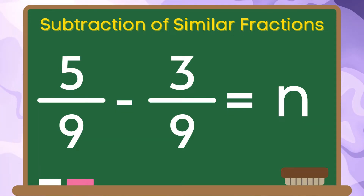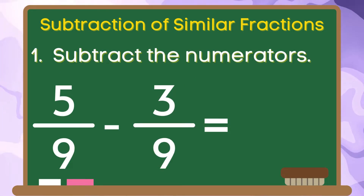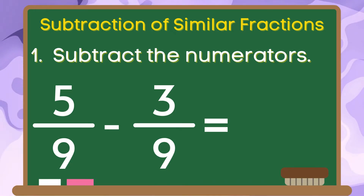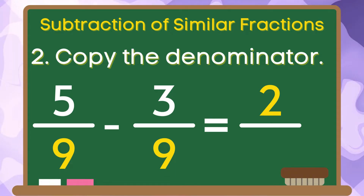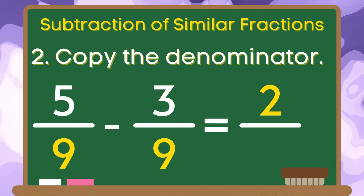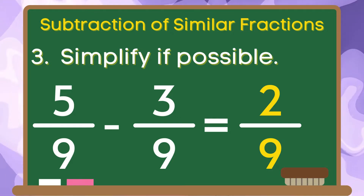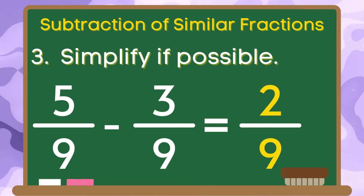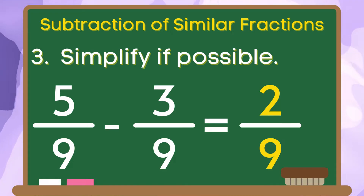Now let us find the difference between five-ninths and three-ninths. Let us use the first step: subtract the numerators. Five minus three is equal to two. Now for the second step, copy the denominator — so let us copy the denominator nine to our answer. For the last step, let us simplify our answer. Two and nine does not have common factors. Therefore, the simplest form and final answer for the difference of five-ninths and three-ninths is two-ninths.